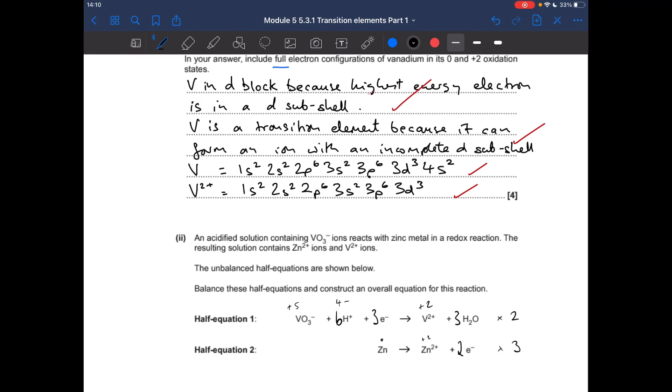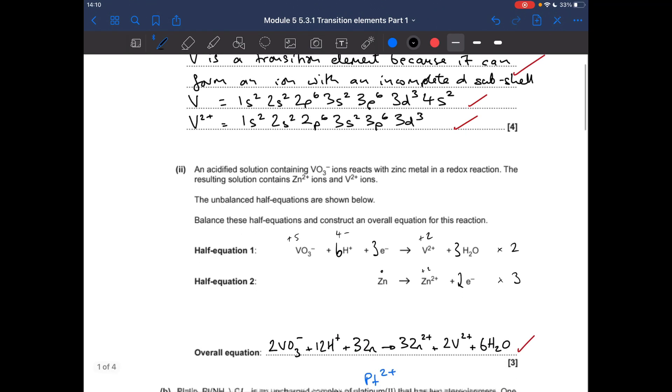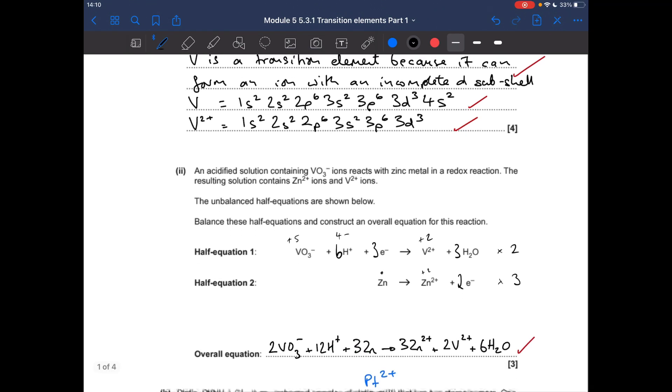They'll be on either side of the arrow, so when we add them together they'll drop out of the equation. And that gives us our overall redox reaction.